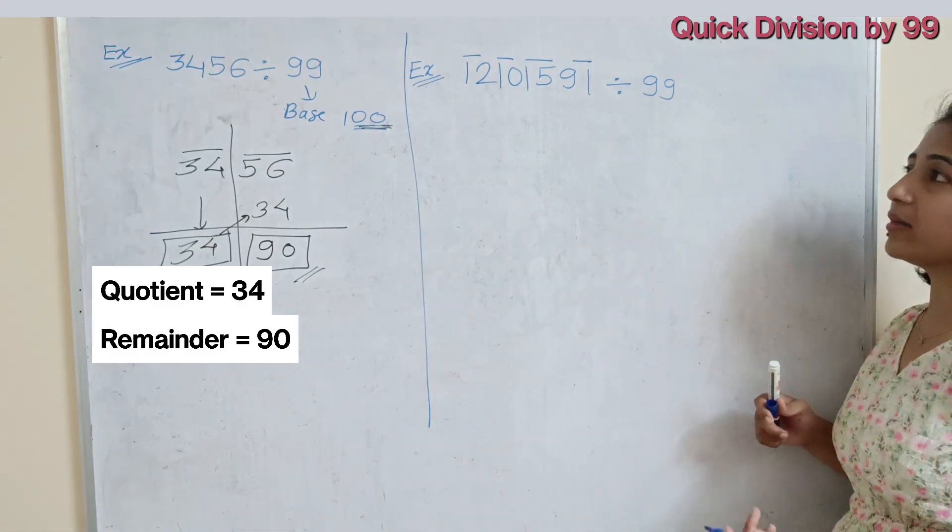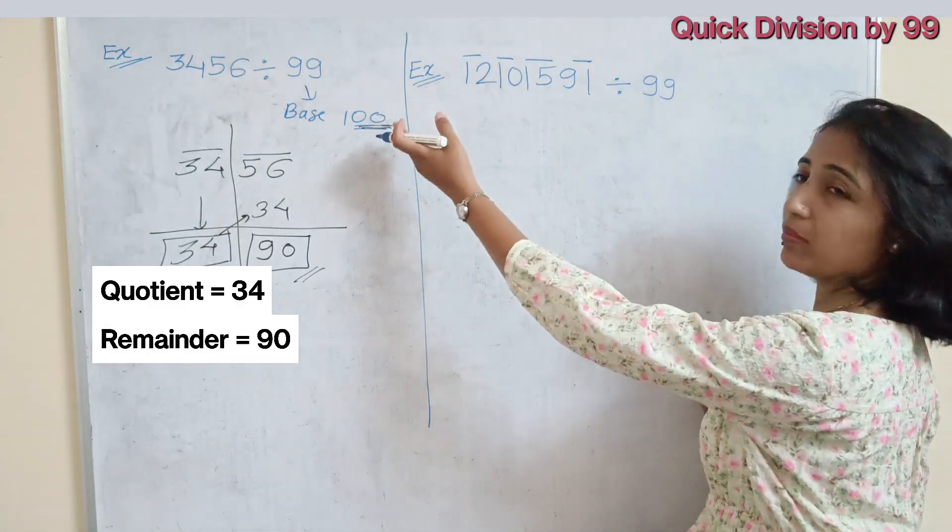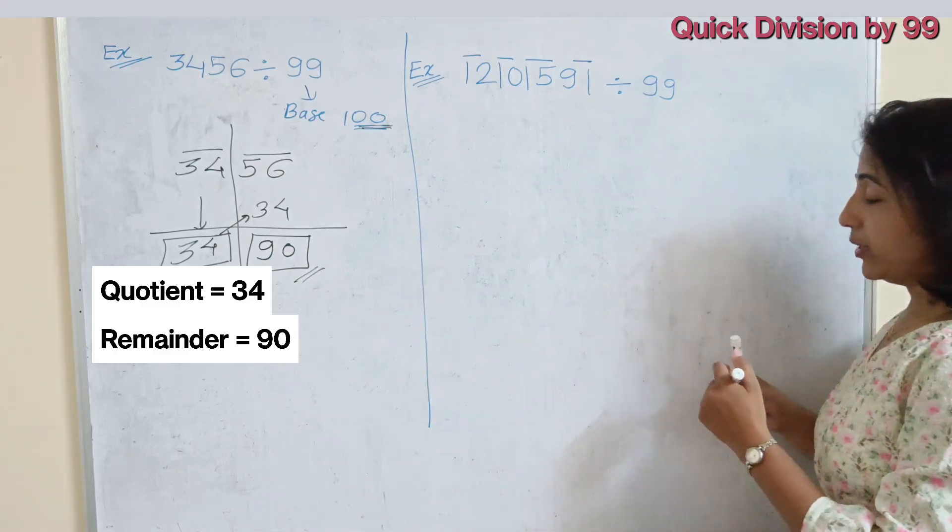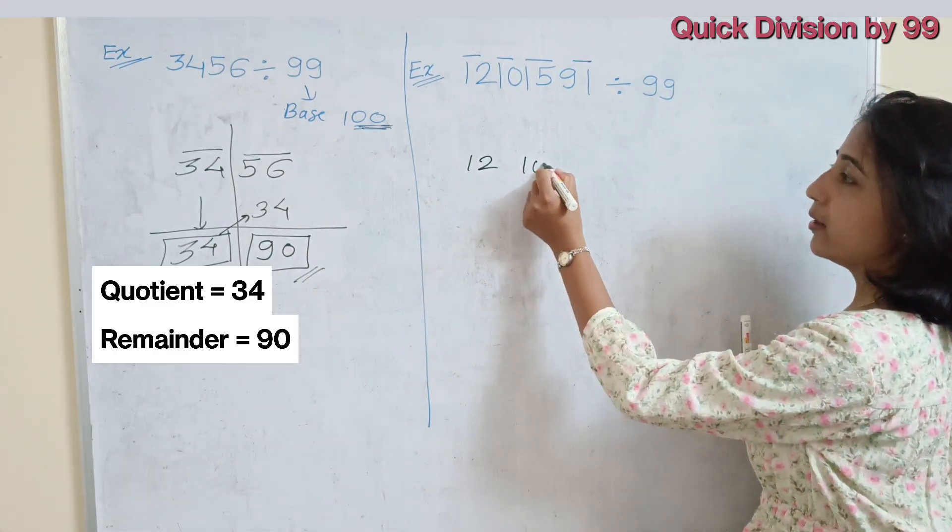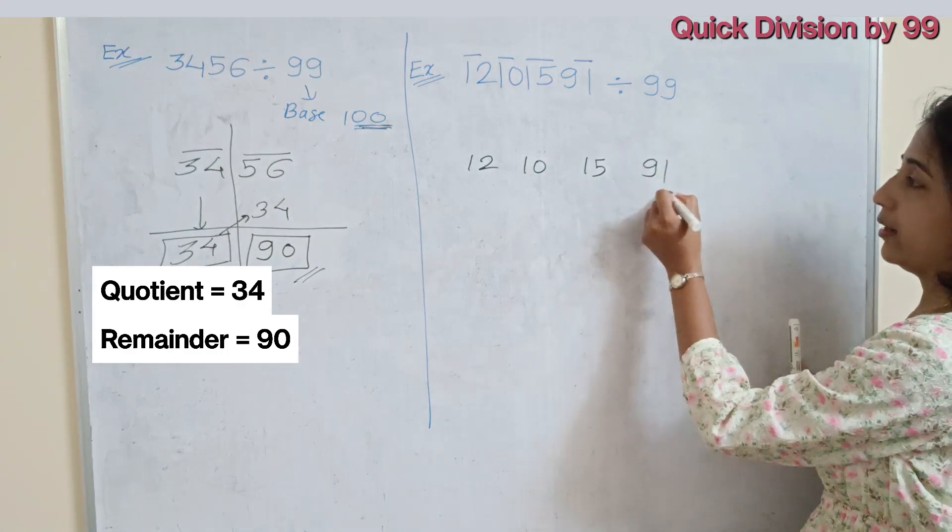Maybe there is a single digit remain in the next. So that number you have to write single. So here our number is 12, 10, 15, 91.